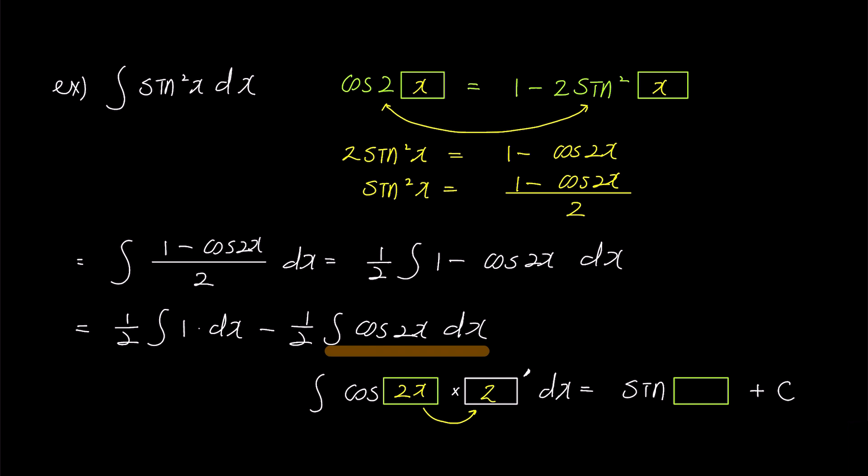However, since there was no term of 2 in the original problem, we multiply the integration symbol by half. This way, multiplying 2 to cosine 2x won't cause any issues. We also multiply half to the right side, and in the green box, we put 2x just like in the left side, and add c. This completes the integration of cosine 2x.